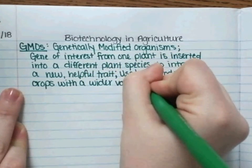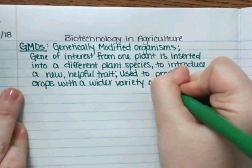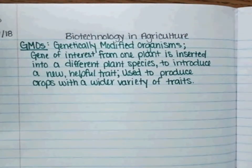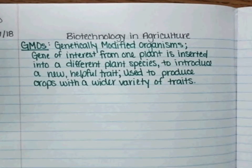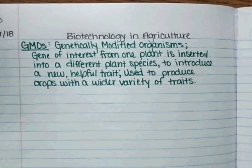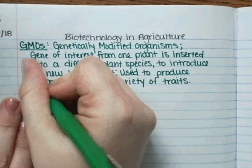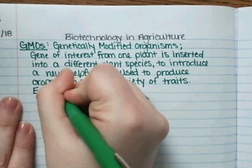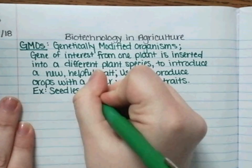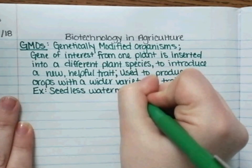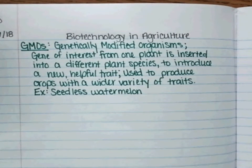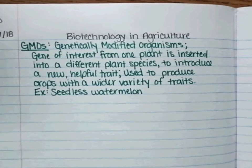Some really good examples of when this is used include the seedless watermelon. Seedless watermelons, or even seedless oranges, could be genetically modified — they've taken a trait from a plant that doesn't naturally produce seeds in its fruit and inserted it into watermelon. Seedless watermelon is more valuable to consumers, so farmers find they are able to sell more watermelons and therefore make more money.